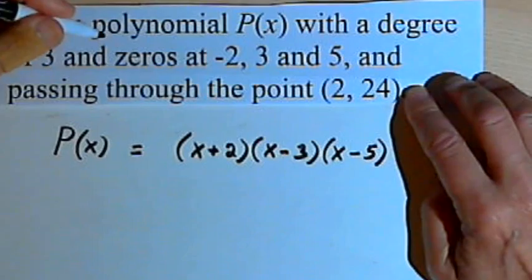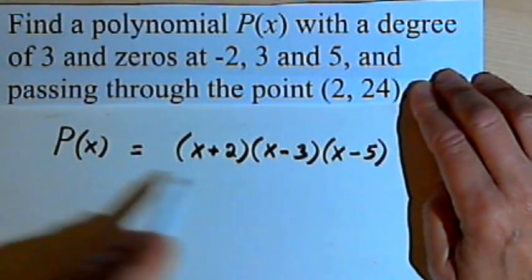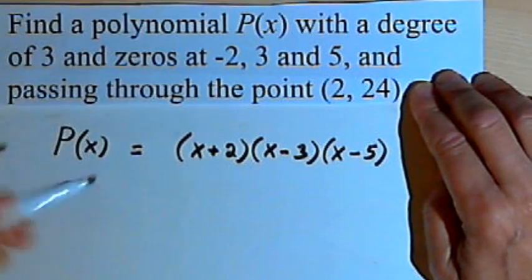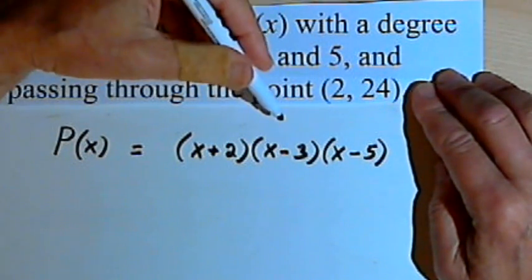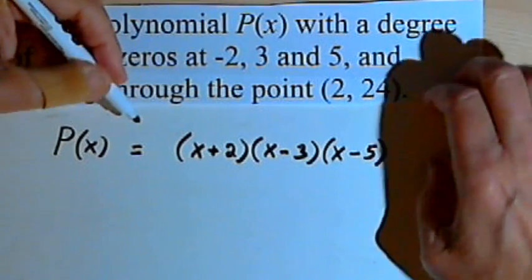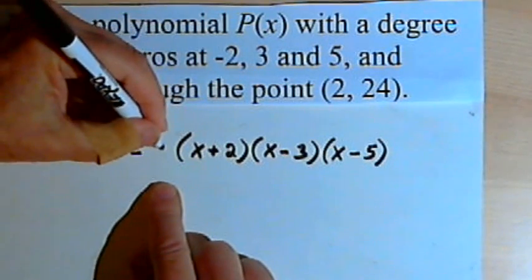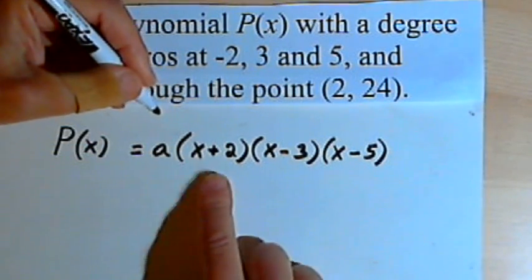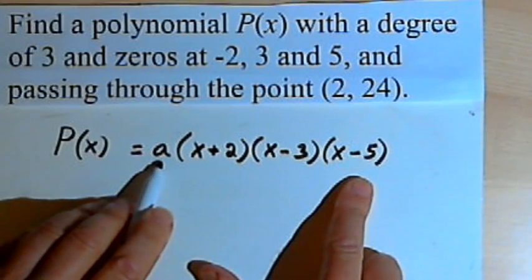Now if we hadn't been told about the point at (2, 24), we could stop right here with what we've got. But since we've got a specific point that this function has to pass through, what I want to do is see if there's going to be a constant called a, a constant which multiplies these three factors.